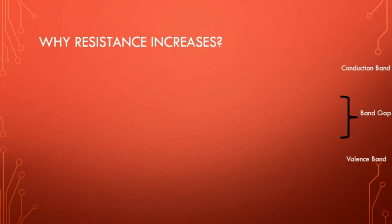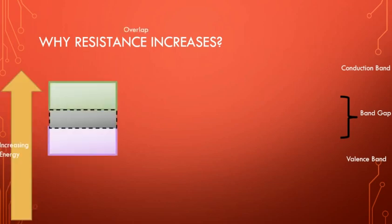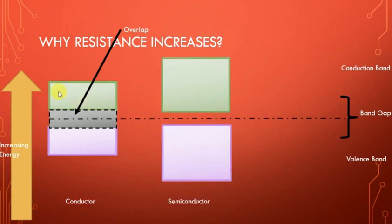In the case of a conductor, the valence band and conduction band overlap each other, so there are excess electrons in the conduction band. When you increase the temperature, more electrons go to the conduction band by absorbing energy. The conduction band becomes crowded, there are more collisions between electrons, and as seen previously in the illustration, this collision results in an increase of resistance.